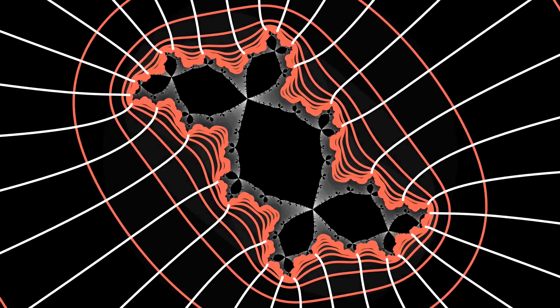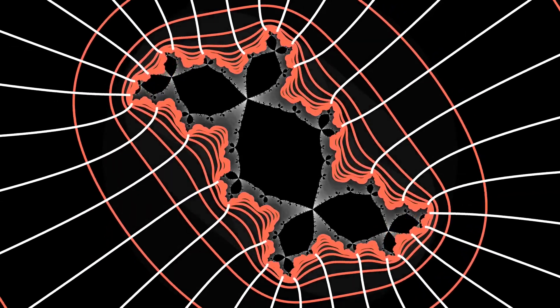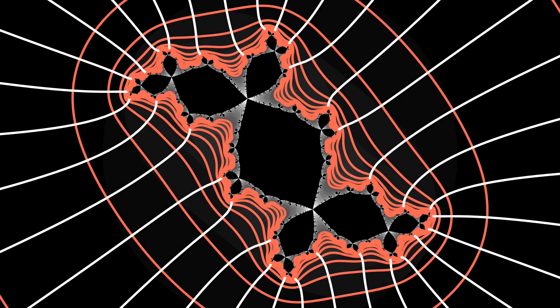Since this is a locally connected, filled Julia set, we can use the Riemann mapping theorem to get a conformal map between the exterior of the unit disk and the exterior of the Julia set. A few rays and circles have been drawn to help visualize.